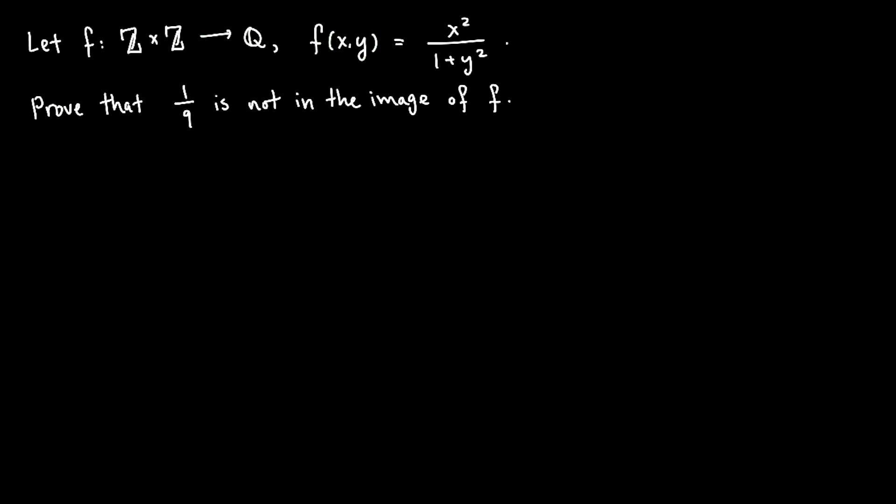So what this notation means is that f takes a pair of integers as an input and produces a rational number. And let's just check that that makes sense. If I plug in a pair of integers x and y, well, then since x and y are both integers, so is x squared, so is 1 plus y squared. So I have an integer over an integer, and you can check, 1 plus y squared that's never going to be 0, so I'm not dividing by 0.